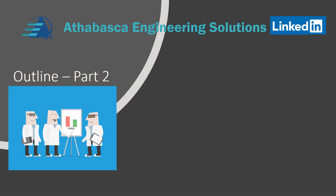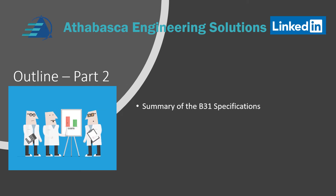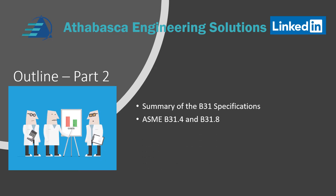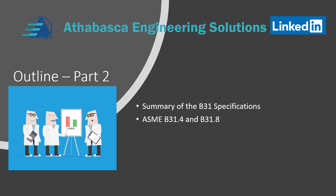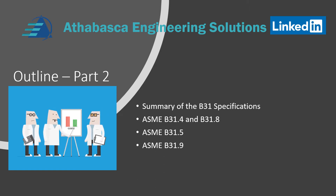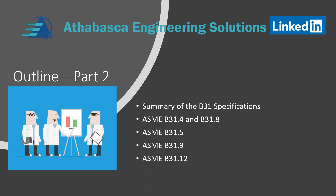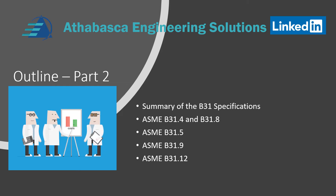In part two of this presentation, we will talk more about summaries of applications for B31 specifications. We've grouped B31.4 and B31.8 together because they're specifically for pipelines. ASME B31.5 will follow — that's for refrigeration — then B31.9 for building services, and wrapping it up with the relatively new specification B31.12, which is for hydrogen service.